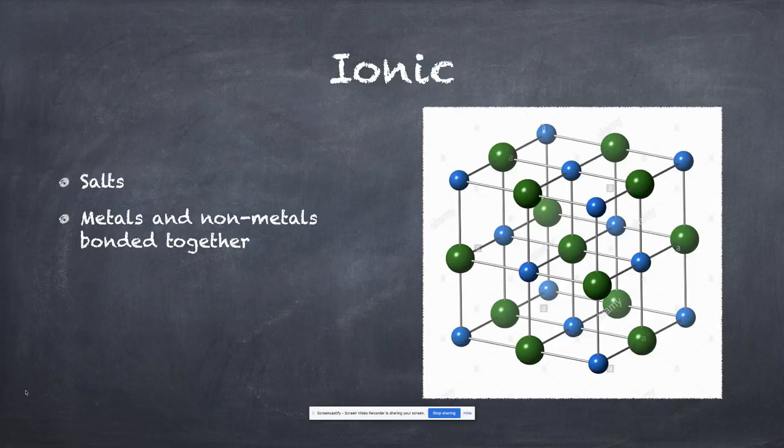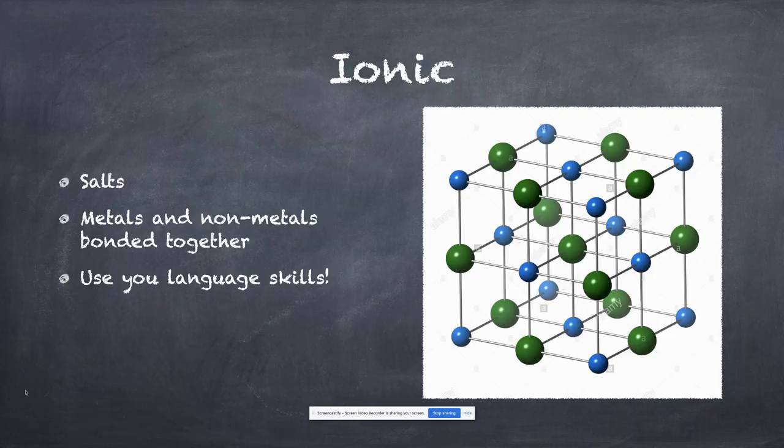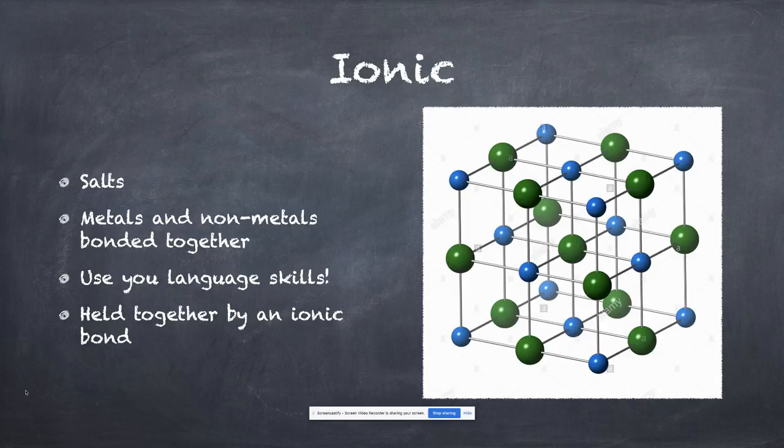Ionic. These are salts, when you have metals and nonmetals bonded together, like sodium and chloride. Use your language skills: it would have to be ionic bonds holding an ionic solid together. This diagram looks great but not 100% accurate. It looks like there are sticks between the atoms. In reality, they're more adjacent to each other, like that last diagram I showed a few slides back. If the slides are moving too fast, just pause, copy down what you need, and restart the video.